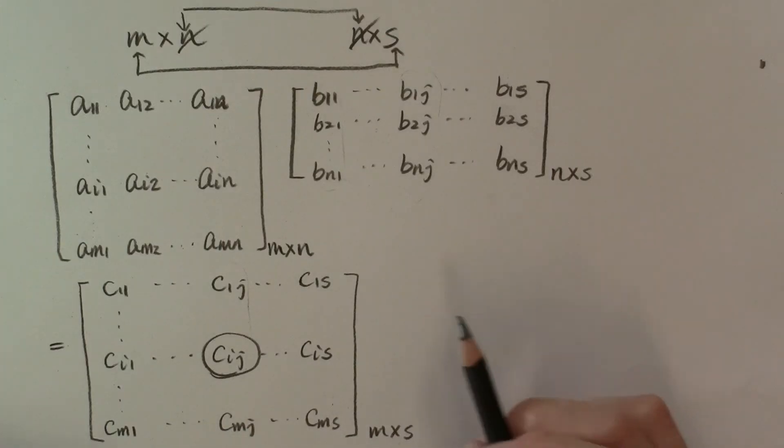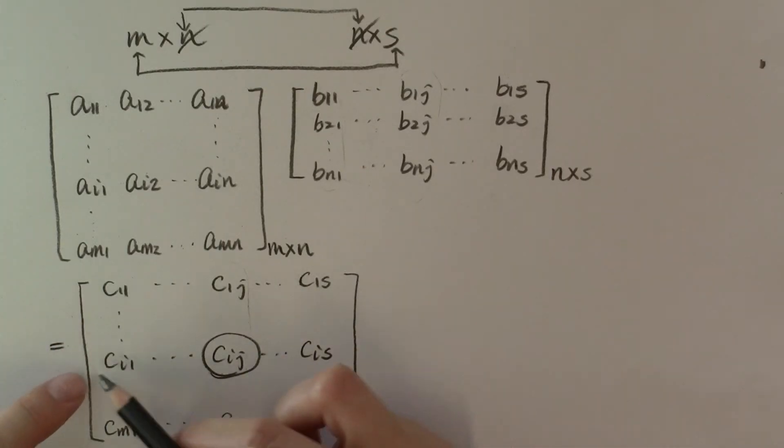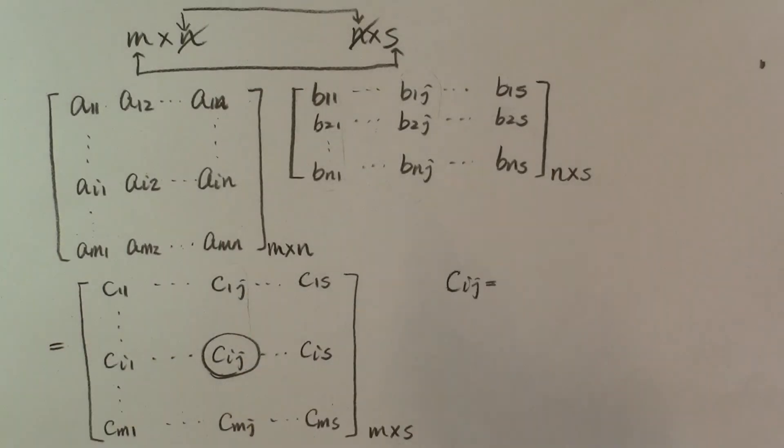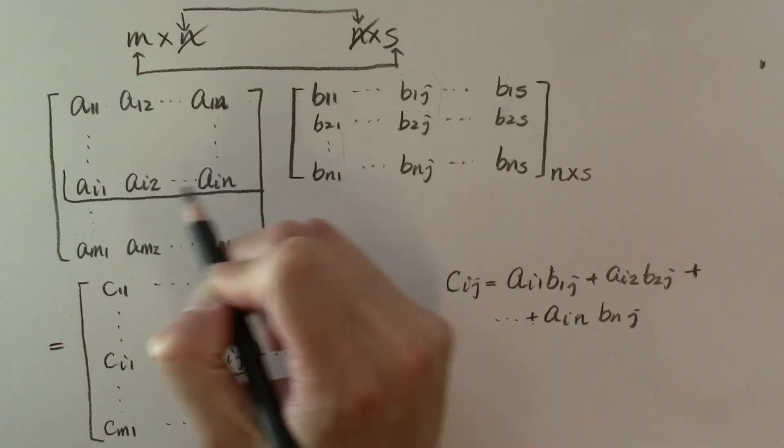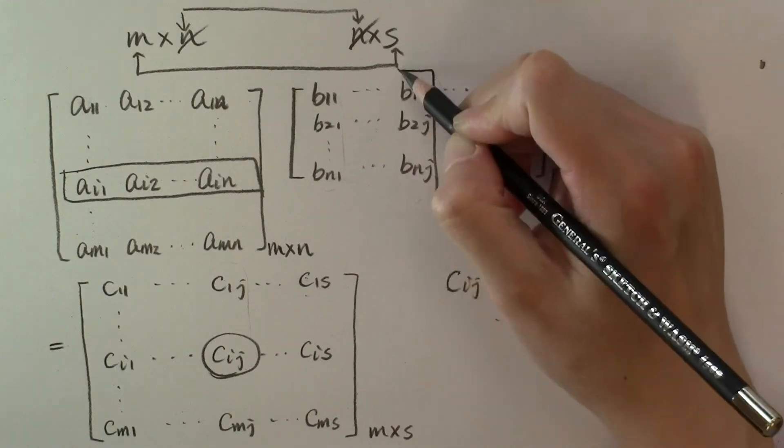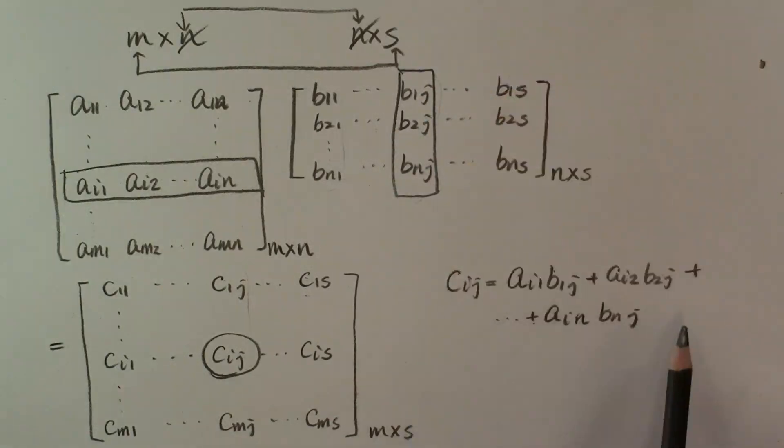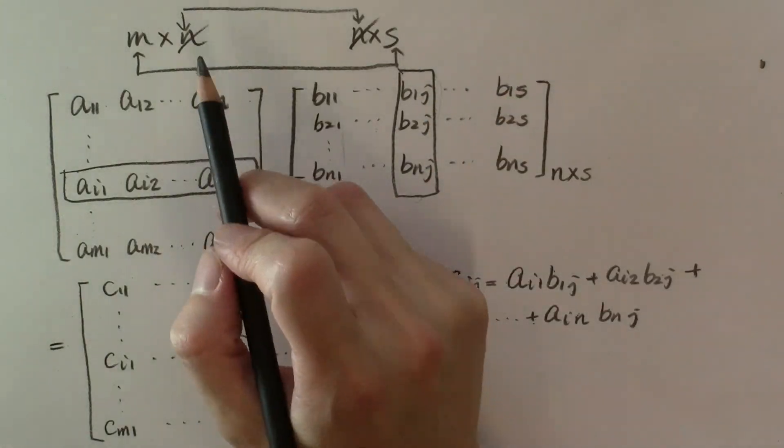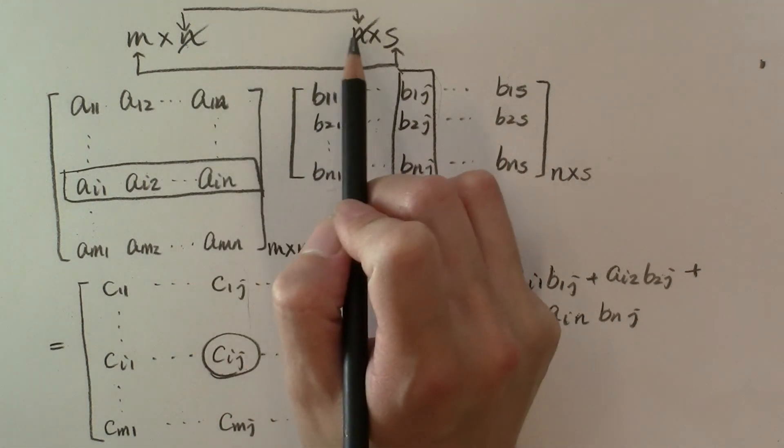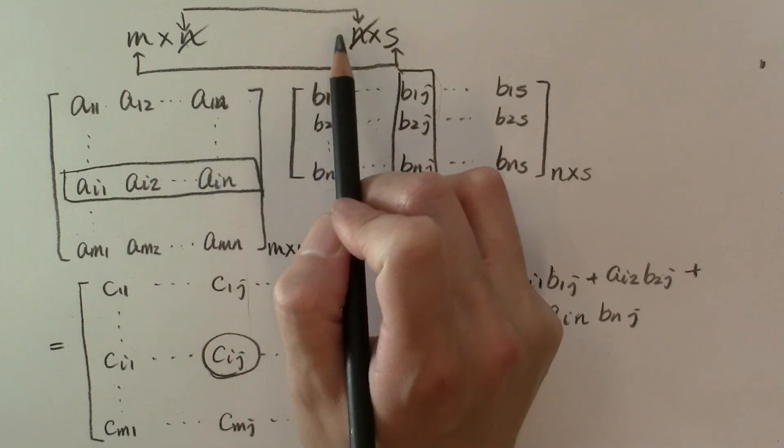And therefore, the element C sub ij, which is the element of matrix C on the ith row and jth column, is equal to the scalar product of the ith row of matrix A and the jth column of matrix B. By this definition, you can also tell that if the inner dimensions of the two matrices are not equal to each other, then they cannot be multiplied to each other.